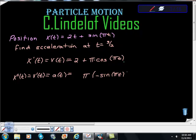Times the derivative of the inside, which is just π. So we have π times π is π². Then this negative sine, multiply π² times negative 1, gives us negative π² sin(πt) = a(t).